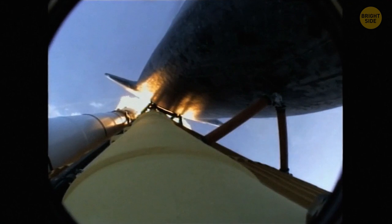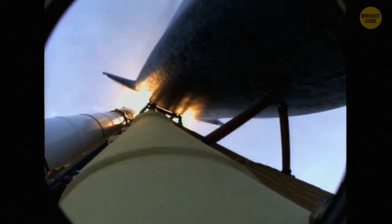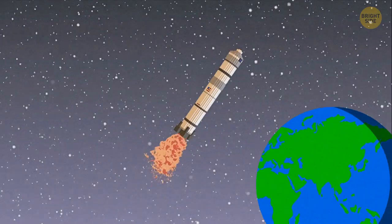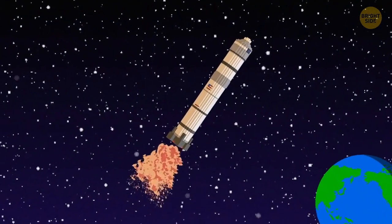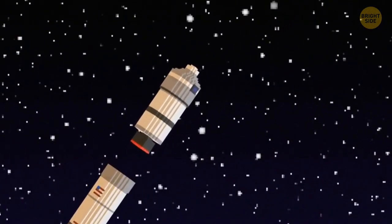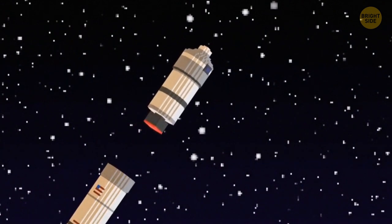The two side boosters undock, leaving the common booster core for further ascent. When in orbit, the rocket releases its payload. This is the Parker Solar Probe, the first spacecraft to touch the sun.